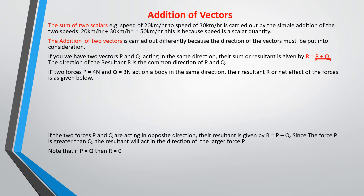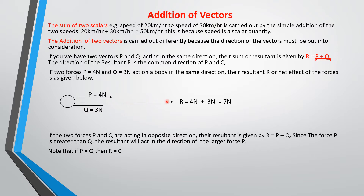If the vectors are acting in the same direction, the resultant is gotten by addition, and they move in the same direction. So if you have two forces P = 4 newtons and Q = 3 newtons acting on a body in the same direction — as represented in this diagram — then the resultant is 4 plus 3, which equals 7 newtons.